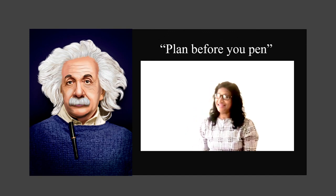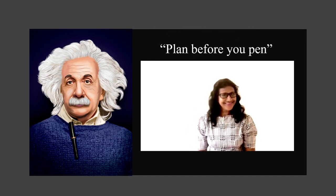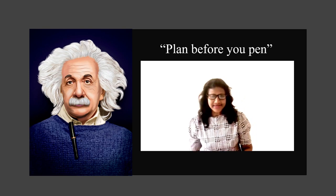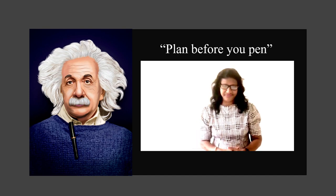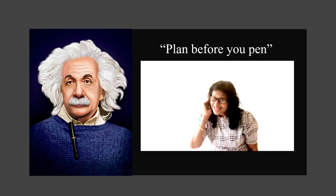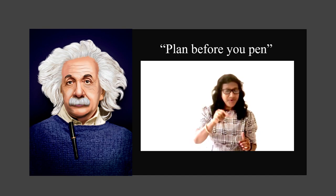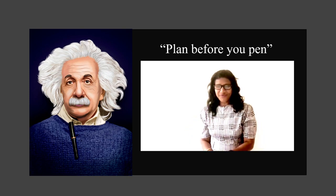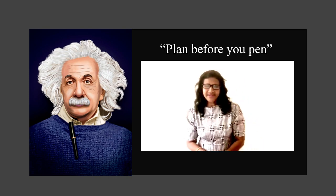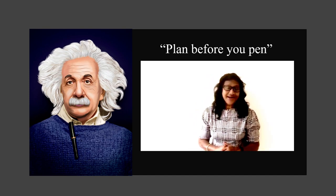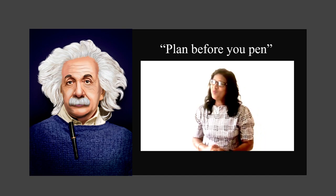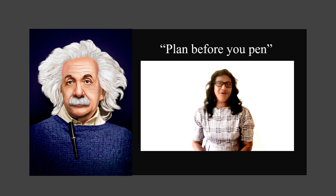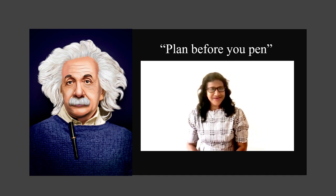Have you heard about the famous scientist Albert Einstein? Do you like this hairstyle? This Sir Albert Einstein seemed to know almost everything, even about writing. He said: plan before you pen. So obviously you also have to plan. When it comes to planning, you can have your own way. Finally, after writing the report, what you must do is proofread — check for grammatical accuracy and spellings — because they are telling marks.